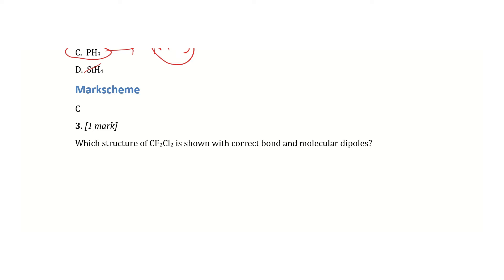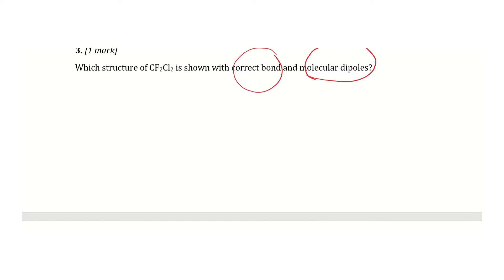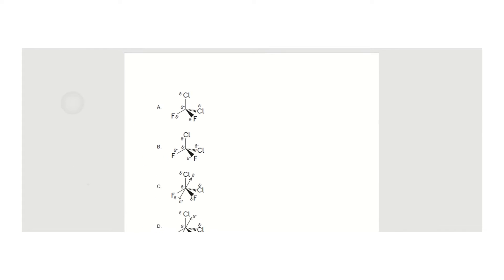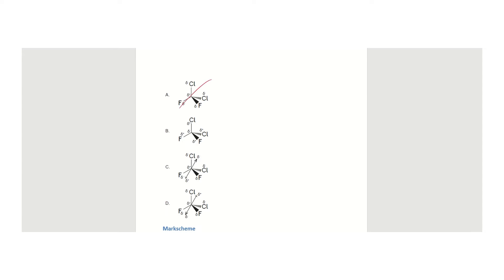The next question asks which structure of CF₂Cl₂ shows the correct bond and molecular dipoles. The molecular dipole means electrons are more closely towards the more electronegative element, so the arrow points to that element. I can easily eliminate the first two options because there's no dipole moment shown. That leaves option C and D. Option C points towards the chlorine atoms, while D points towards the fluorine atoms. Fluorine is always the most electronegative element, so I eliminate C. The correct answer is D.